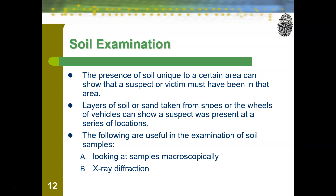The presence of soil unique to a certain area can show that a suspect or victim must have been in that area. A soil scientist knows all about the different soil types in a region and can figure out where a person may have been based on the soil found in their shoes, for example. Layers of soil or sand taken from shoes or wheels can show a suspect present at a series of locations, with multiple layers revealing multiple places someone has been.